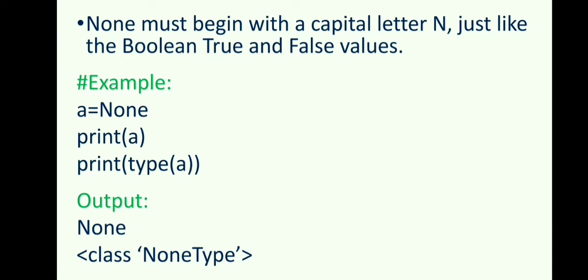In this example, None value is assigned to the variable a. The next statement print(a) will display the value None. We can get the data type of an object by using the built-in function type in Python. Here the data type is NoneType.